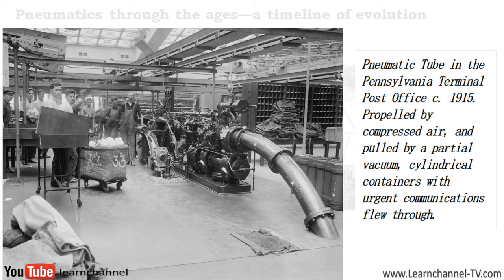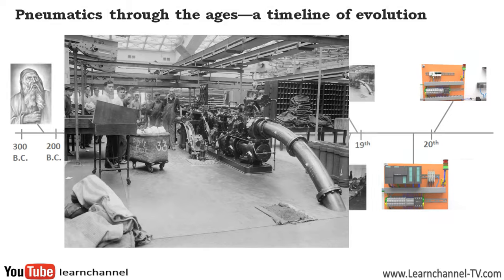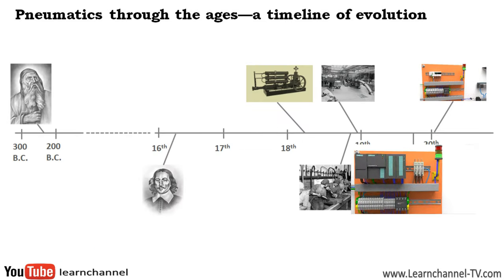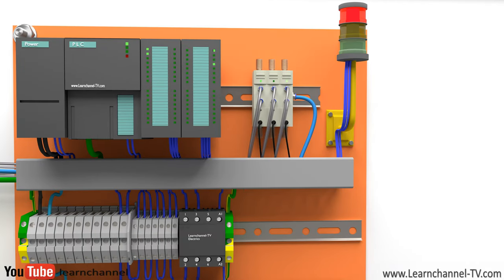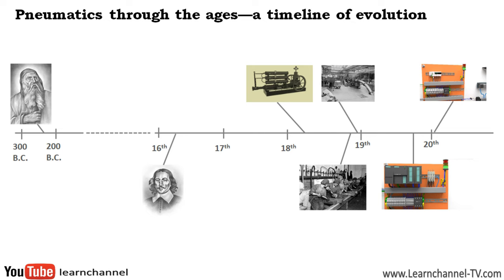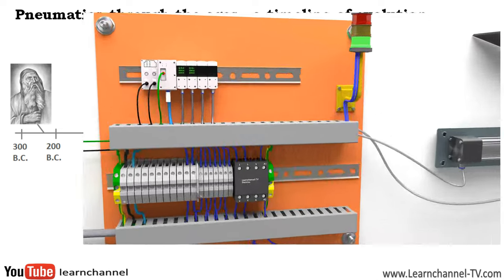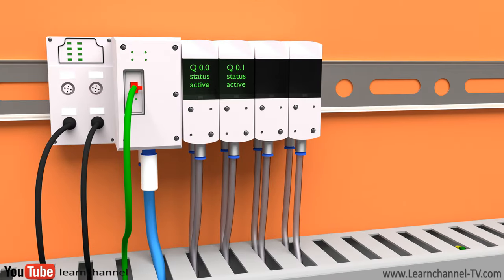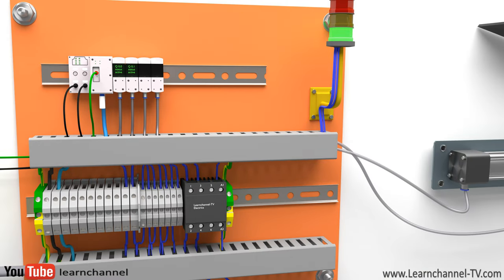Even today, this means of transport still remains, for example in hospitals, and it's still developed. Towards the end of the 1960s, the first digitally controlled pneumatic components began to enter the market, playing a big role in the field of automation. This was also about the time when the programmable logic controller, or PLC, arrived on the market. Nowadays, electronics and pneumatics grow together more and more, building one unit.